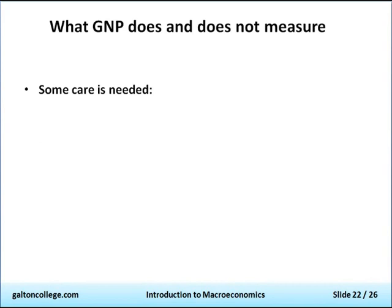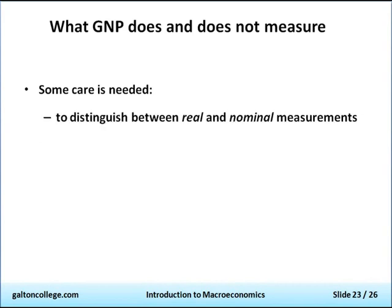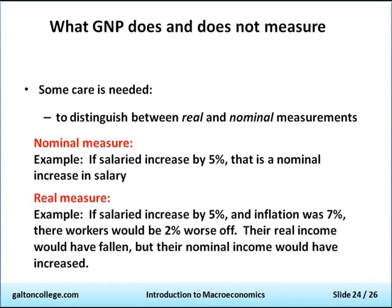GNP doesn't measure some things, so we have to be careful. We need to distinguish between real and nominal measures. A nominal measure — consider salaries as an example. If salaries increase by 5%, that's a nominal increase. However, if salaries increased by 5% and inflation was 7%, the workers would be worse off by 2% — prices have gone up 7% but they've received only an extra 5%, so their real income would have fallen, while their nominal income went up by 5%.